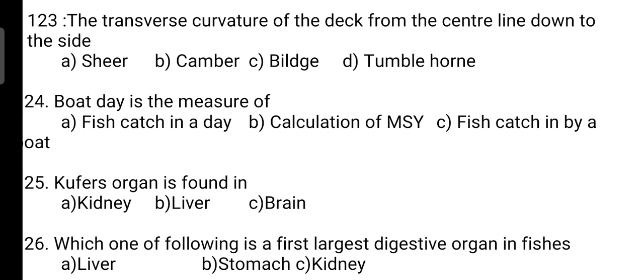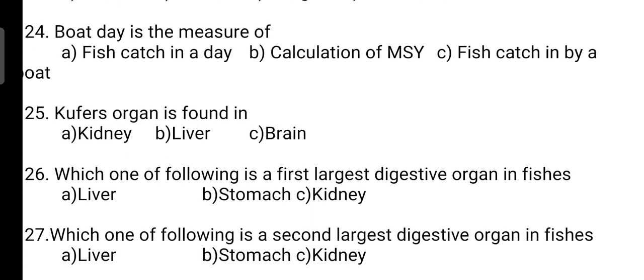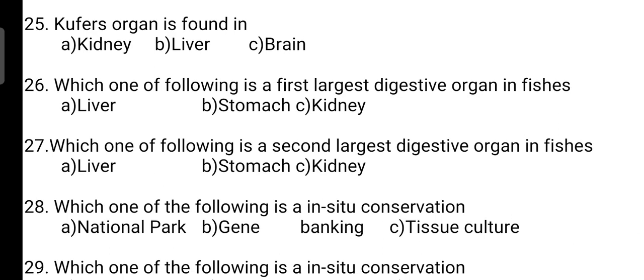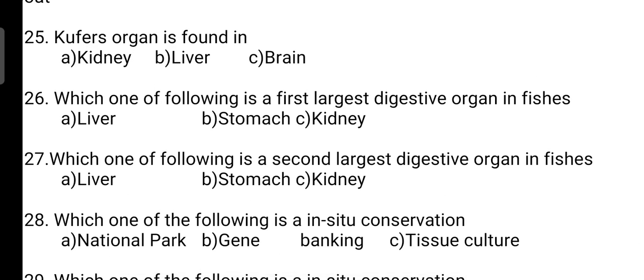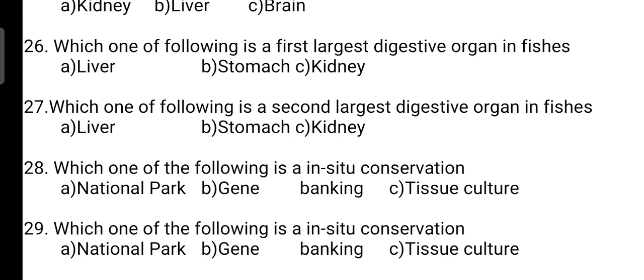Eels show which type of migration? Correct answer is Option A — they show catadromous migration. Lakes in which water never cools below 4 degrees Celsius are: correct answer is Option B — tropical lakes. Most commonly used source of gamma rays in food irradiation: correct answer is Option B — it is cobalt-60. The transverse curvature of the deck from the center line down to the side is known as: correct answer is Option B — it is known as camber.